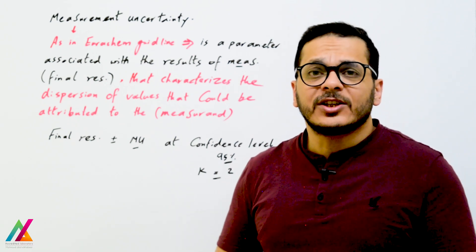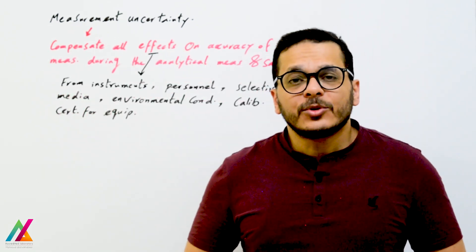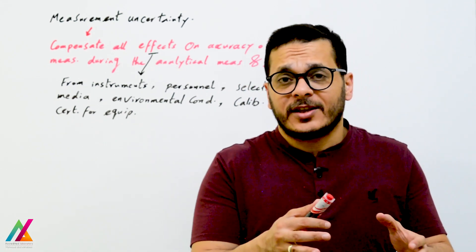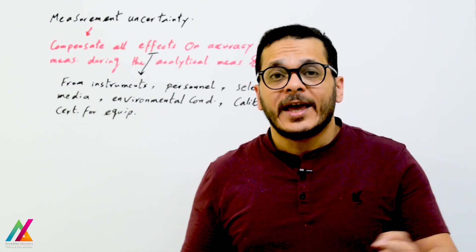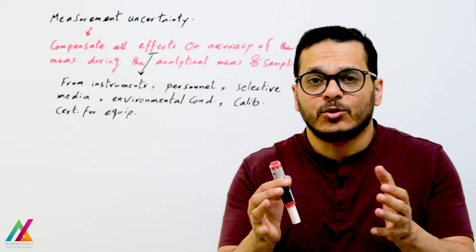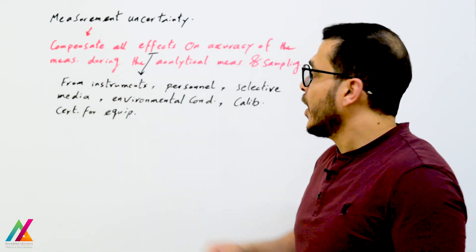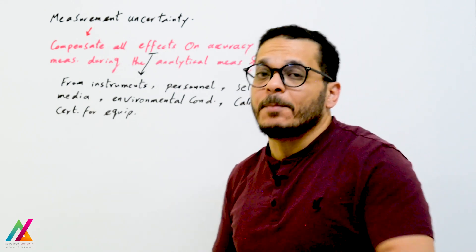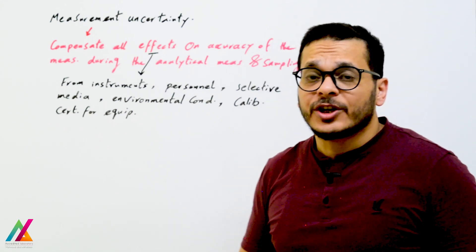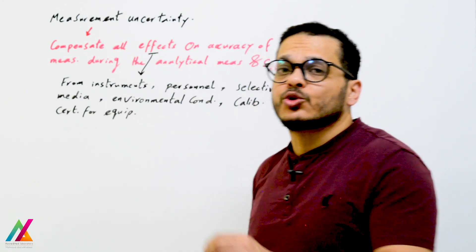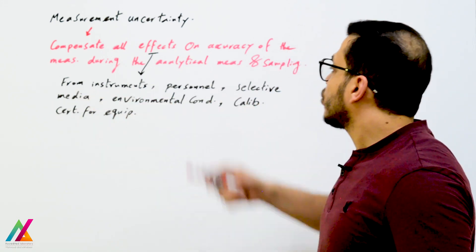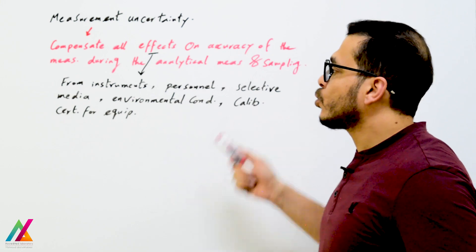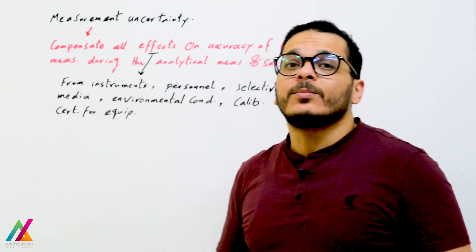This is reported at a high confidence level, most commonly 95%, at a coverage factor of 2. To calculate measurement uncertainty, you should first identify all sources that may affect the result of the analyte during the whole measurement process — from sampling up to analysis. These effects can come from biological, instrumental, and personal bias, selective media, environmental conditions, and calibration certificates for externally calibrated equipment.